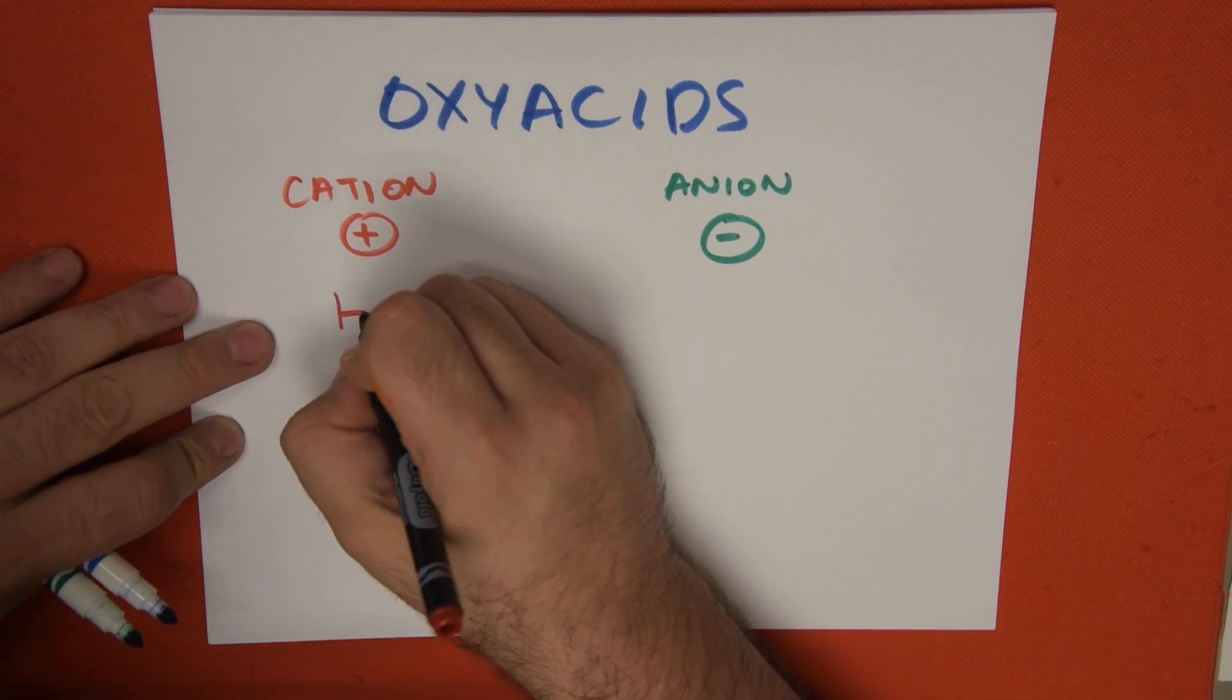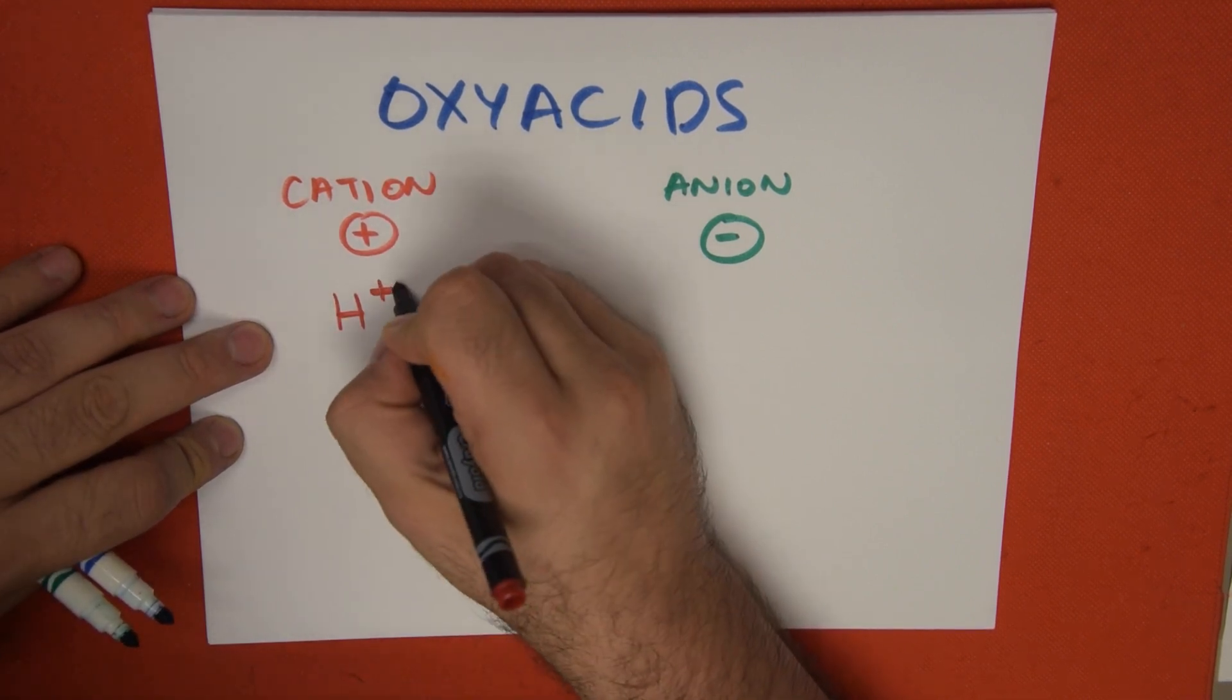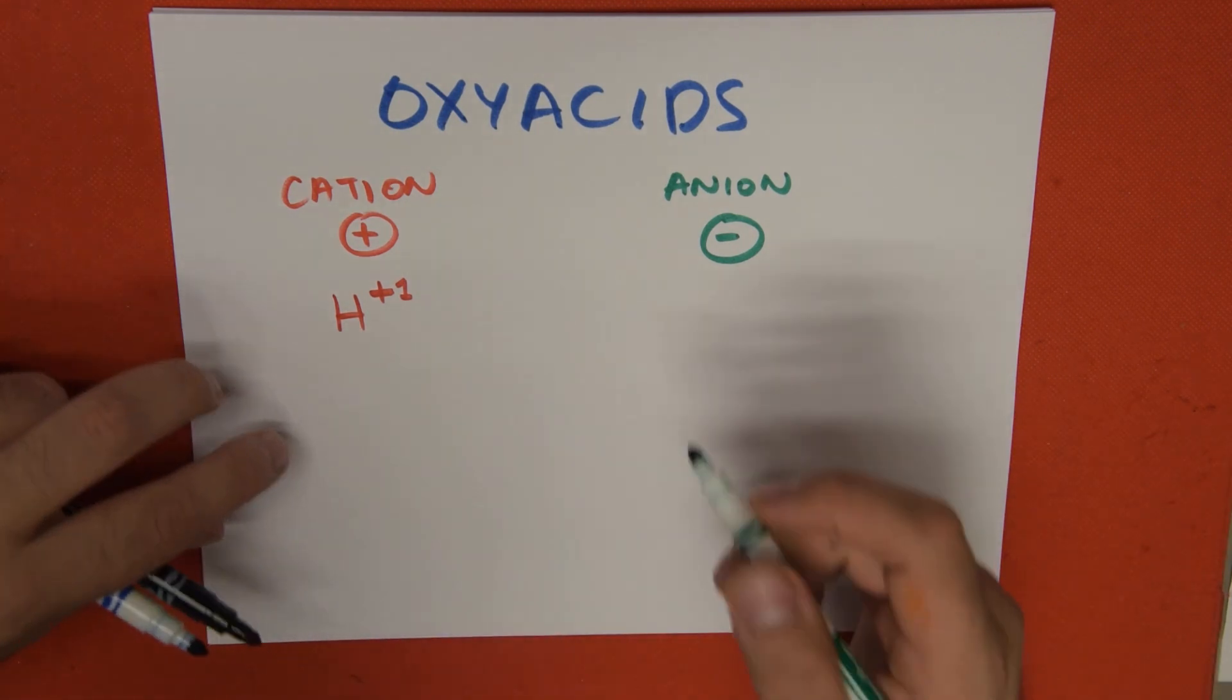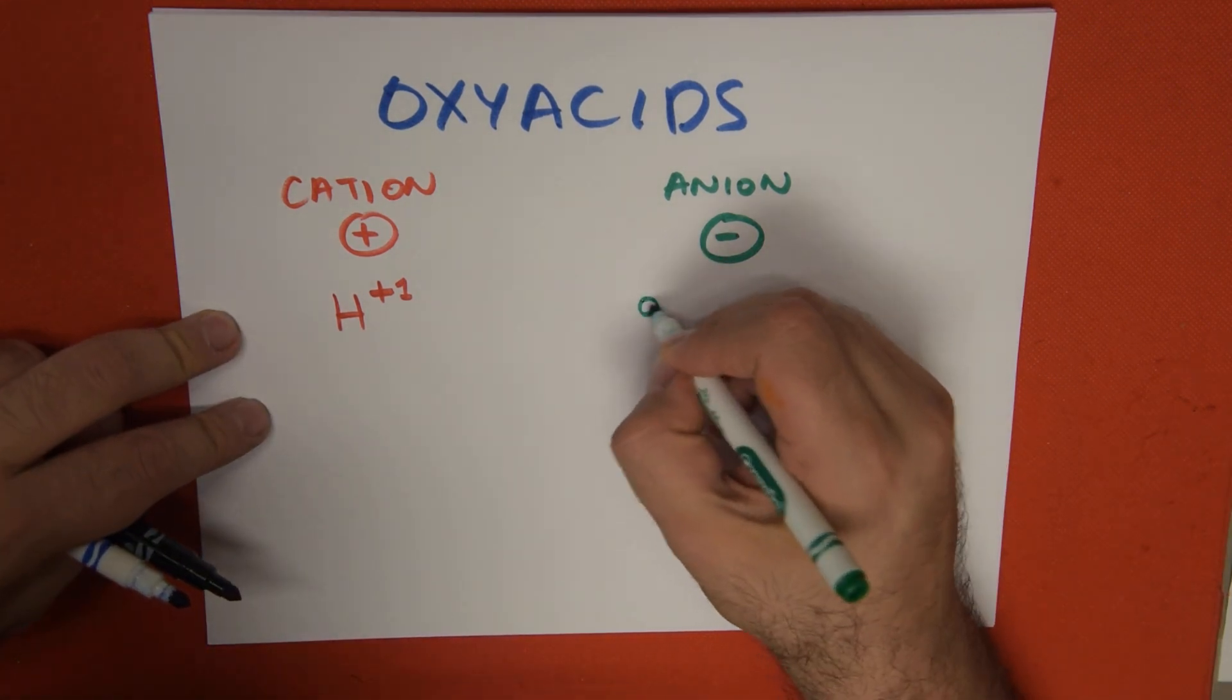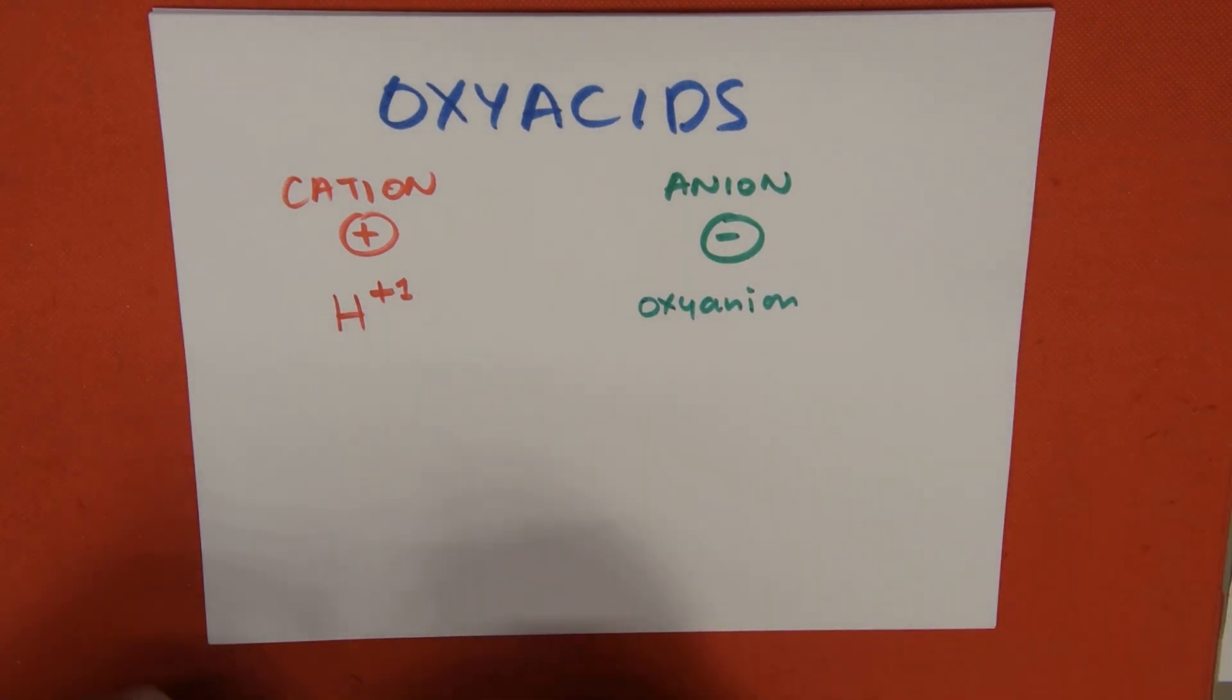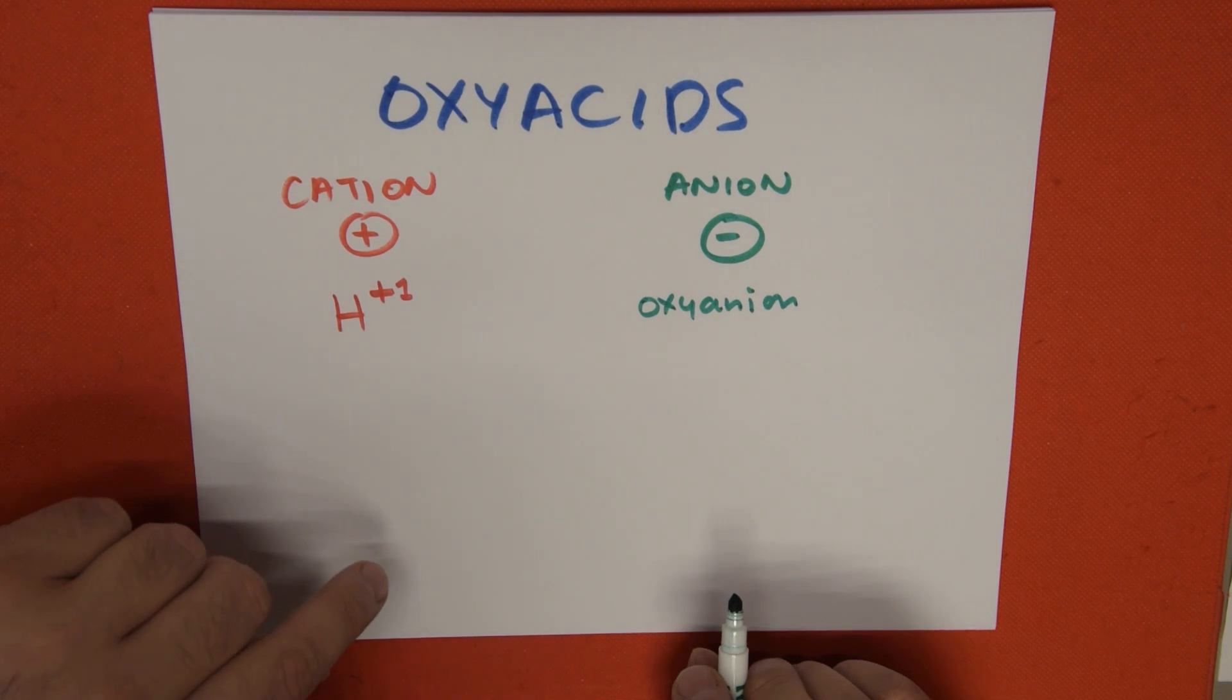The cation for oxyacids is always hydrogen with a +1 valence. There's no variation for that. The anion is going to be an oxyanion. We already spoke about what an oxyanion is in the oxysalts video that you can also consult.